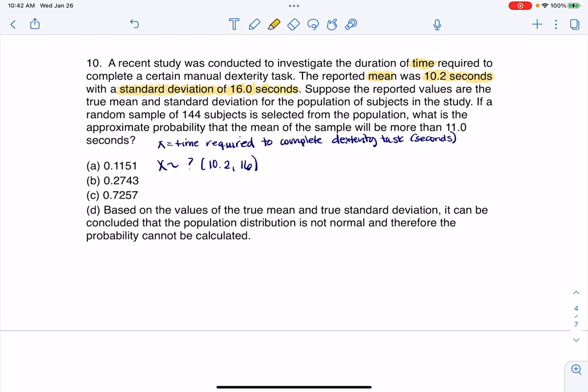Oh, here we go. So if a random sample of 144 subjects. As soon as I see that I've got this random sample, I'm thinking this is more than likely going to be a sampling distribution problem. So I'm going to write sampling distribution here. And it's going to be for means because I have a numerical variable. So I'm thinking we've got a chapter seven problem here. If a random sample of 144 subjects is selected from the population, what is the approximate probability? There's a capital P word. So I know I'm going to have P with some stuff in parentheses. What is the probability that the mean of the sample - there it is, I'm on a sampling distribution. What is the probability that the mean of the sample will be more than 11 seconds?